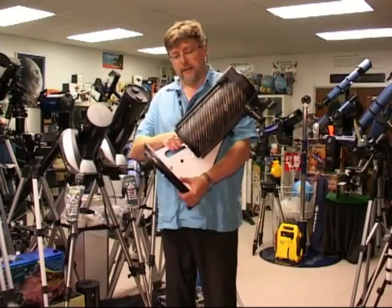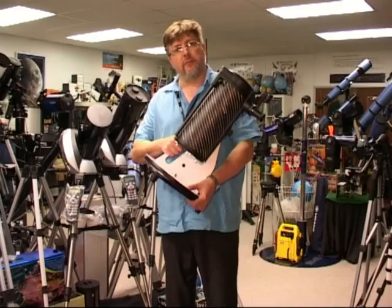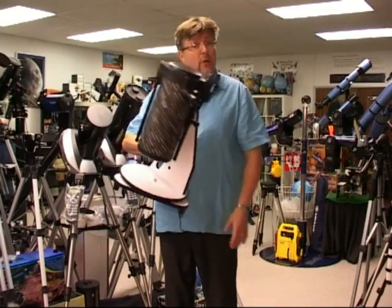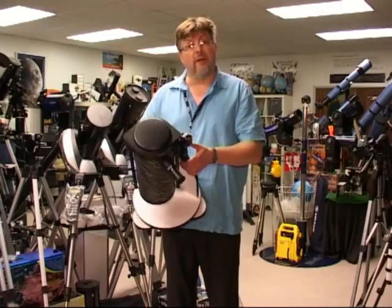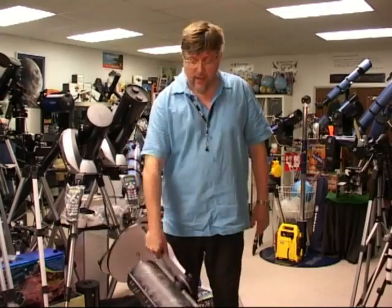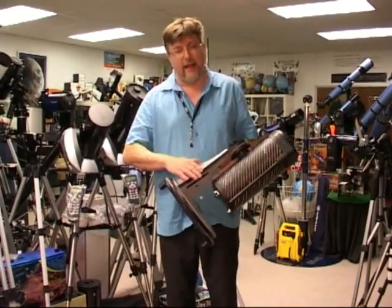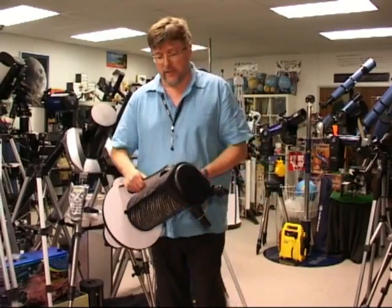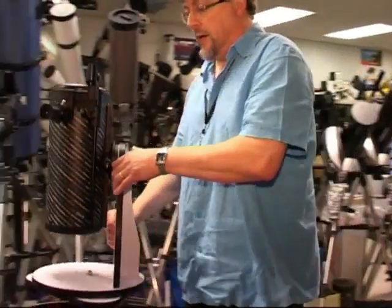Let's take a closer look at the Skywatcher Heritage 130P Dobsonian Starter Scope. One of the first things to note is just how portable this 130mm reflecting telescope is. I can easily pick it up with one hand. It's actually got a handhold here built into the body so that you can carry it around easily. I'm going to place it on the tabletop here so we can get a closer look at it.